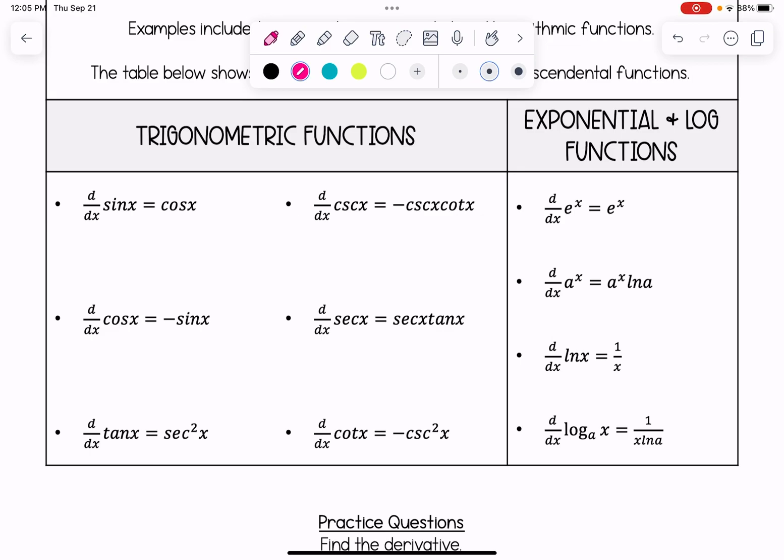One thing that you can use to help you remember the derivatives here is that if the function you're taking the derivative of starts with a c—so cosine, cosecant, cotangent—the derivative is always going to be negative. So that can at least help you remember when the derivative is negative or positive.